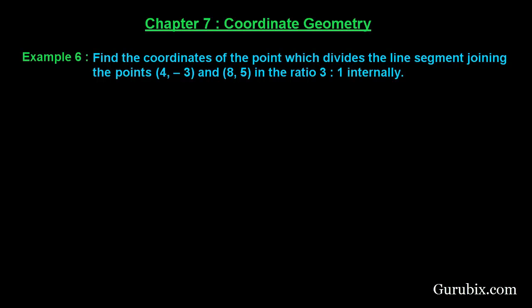This is a very interesting question. Let us solve it. First of all, we shall draw a straight line and suppose this is the point P whose coordinates are (4, -3) and this is the point Q whose coordinates are (8, 5).